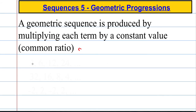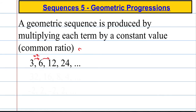So if we take a sequence such as this: 3, 6, 12, 24 — hopefully you can realise that each time, to get to the next term, we are multiplying by 2. So we're doubling each time. The common ratio in this one would be 2.